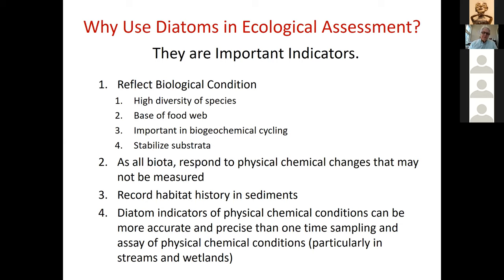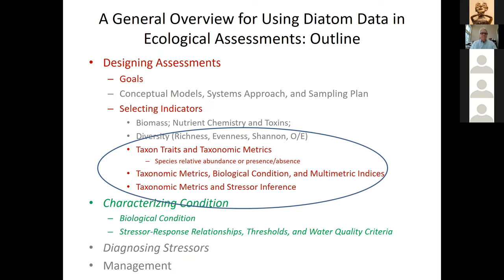We've found that diatom indicators of physical and chemical conditions — using them as stressor indicators — can actually be more accurate and precise than one-time sampling of those physical chemical conditions. This is particularly true in streams and wetlands where physical chemical conditions vary on hourly and daily schedules due to diurnal changes and weather-related changes in habitat. So diatoms are really valuable in ecological assessments.